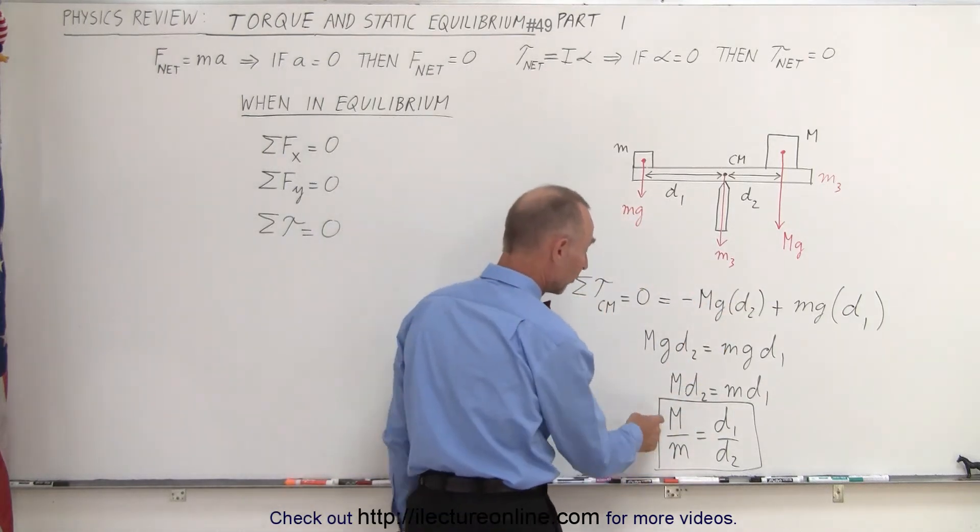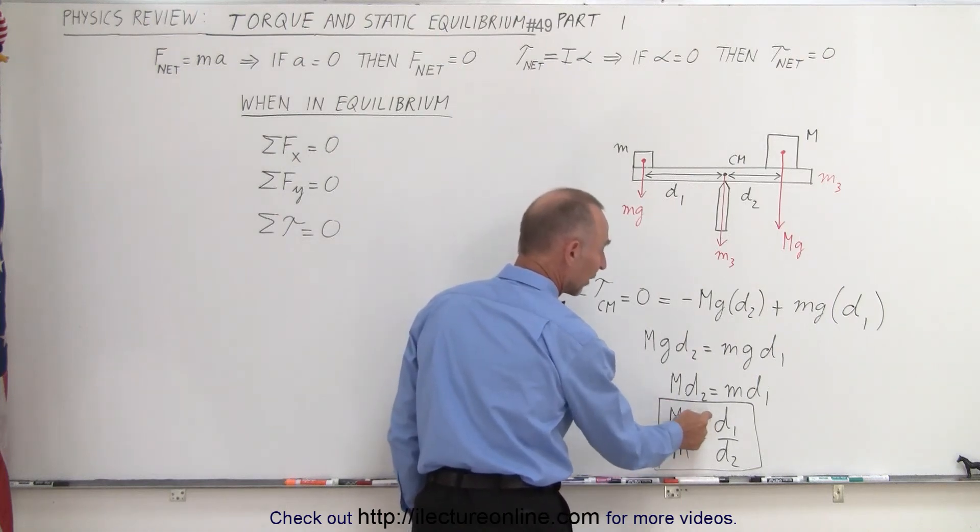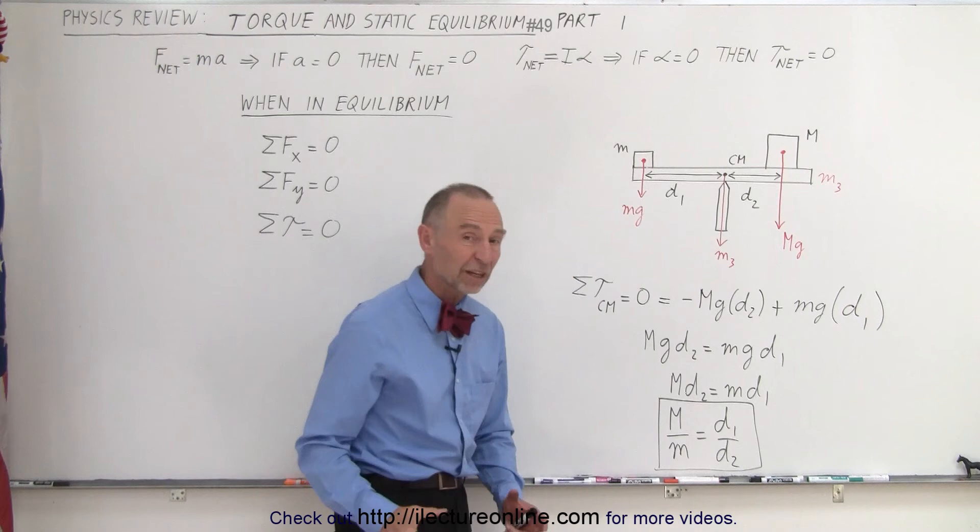When you then solve for the ratio of the big mass to the little mass, that's equal to the distance from the little mass to the point of rotation to the big mass at the point of rotation.